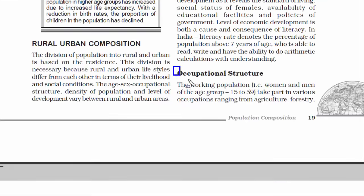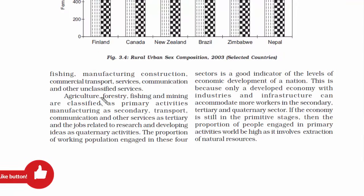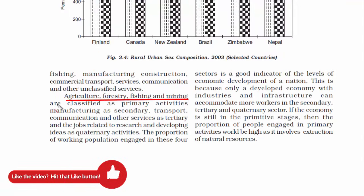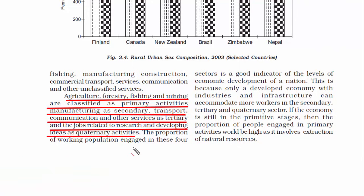The last topic is occupational structure, another important key indicator of a working population. When we say working population, we are referring to people in the age group of 15 to 59 years who are engaged in primary, secondary, tertiary, or quaternary occupations. This can range from agriculture, forestry, fishing, manufacturing, construction, transport services, communication, and many other services.